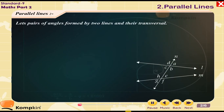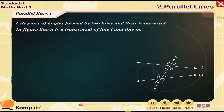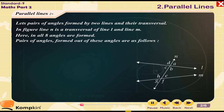Let us look at pairs of angles formed by two lines and their transversal. In the figure, line N is a transversal of line L and line M. Here, in all, eight angles are formed.